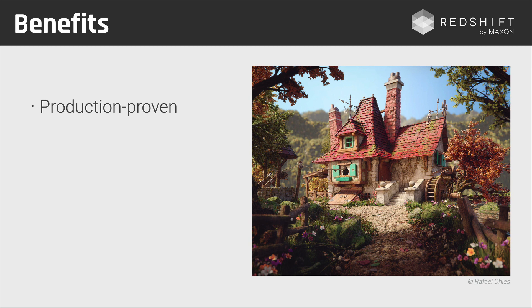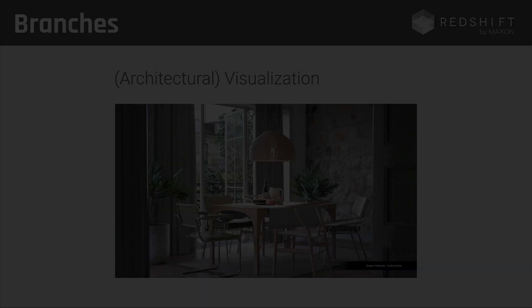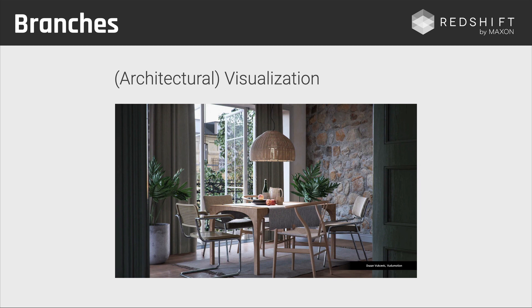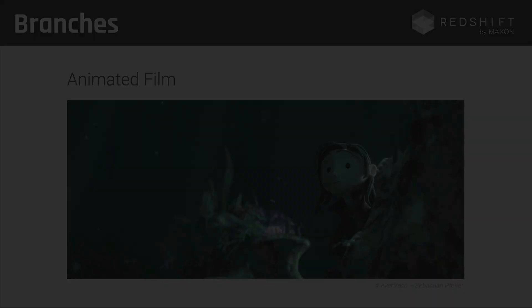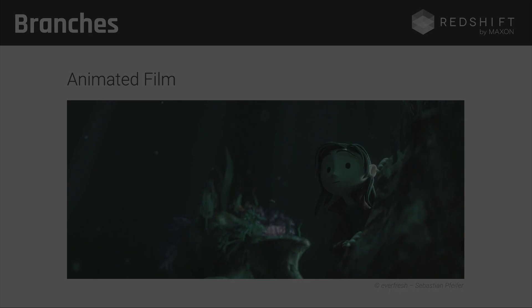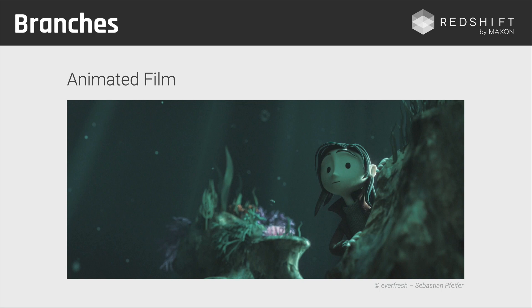Let's talk about the benefits of Redshift in general. First, it is production proven — many studios are already using it in their production pipeline because it's so feature-rich. You've seen the speed and the flexibility with node-based materials and all the sampling settings you can choose, but don't have to use. Redshift is also available across all the host applications I showed. Use cases include motion graphics and design, architectural and industrial visualization, visual effects — including shots from The Expanse — and animated film. Redshift is used in all branches where you need to generate high-quality imagery.